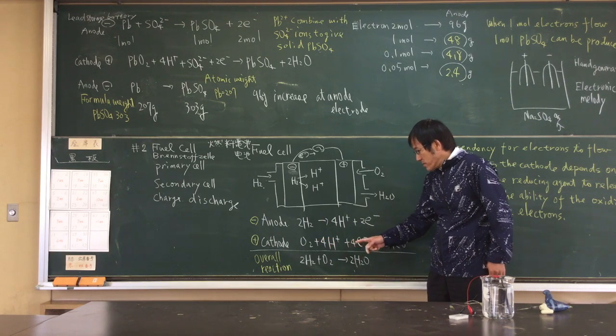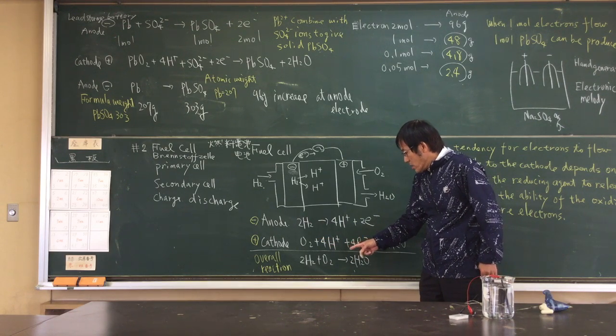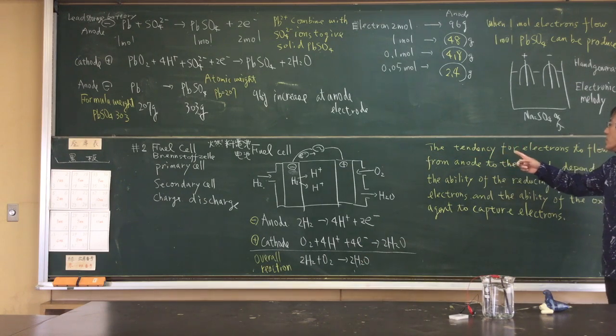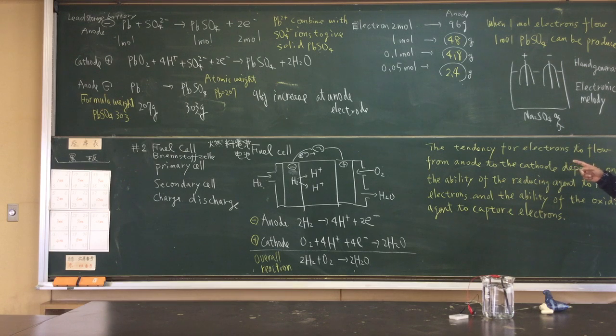The overall reaction is here. The tendency for electrons to flow from anode to cathode depends on the ability of the reducing agent to release electrons and the ability of the oxidizing agent to capture electrons.